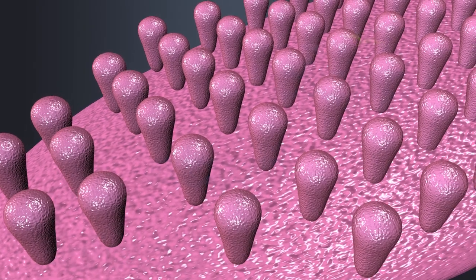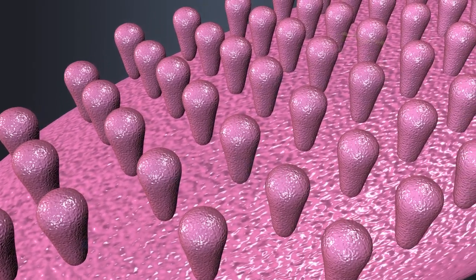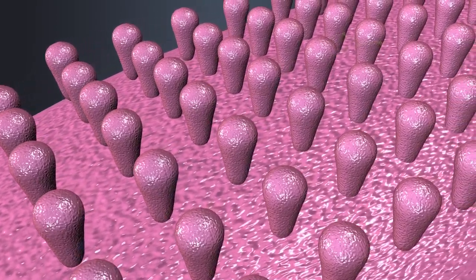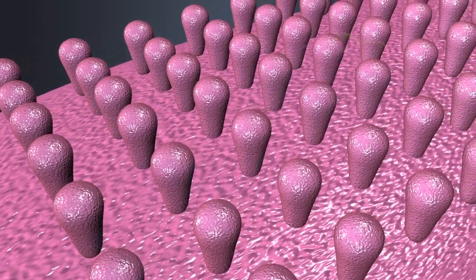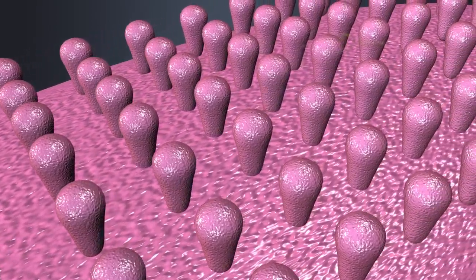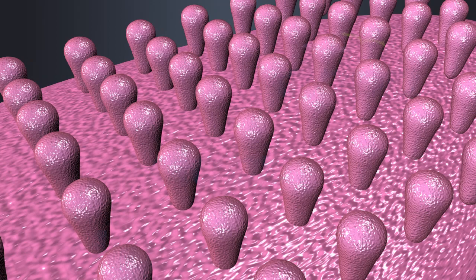The surface of the tongue is covered in tiny, small bumps called papillae. Papillae come in four various types, including filiform, fungiform, circumvallate, and foliate.